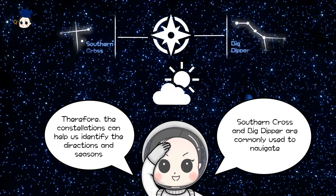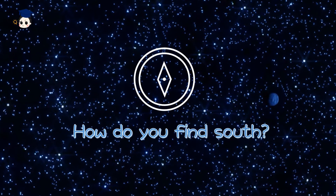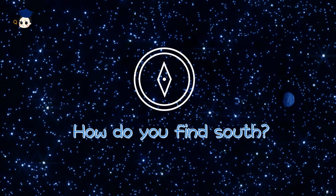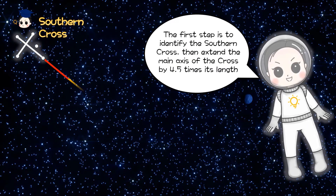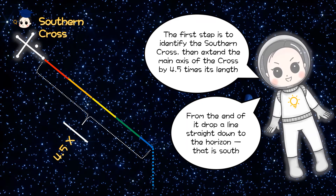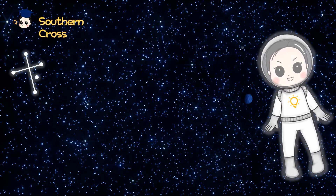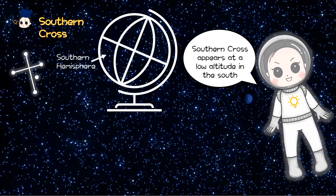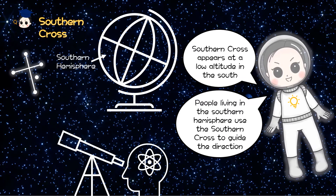Southern Cross and Big Dipper are commonly used to navigate. How do you find South? The first step is to identify the Southern Cross, then extend the main axis of the cross by four and a half times its length. From the end of it, drop a line straight down to the horizon. That is South. Southern Cross appears at a low altitude in the South. People living in the Southern Hemisphere use the Southern Cross to guide their direction.